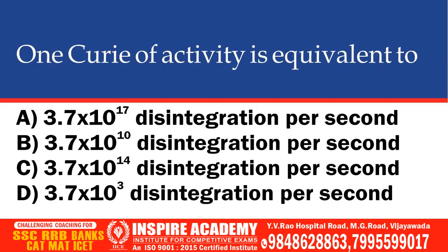One Curie of activity is equivalent to: 3.7 × 10^17, 3.7 × 10^10, or 3.7 × 10^3 disintegrations per second. The correct answer is 3.7 × 10^10 disintegrations per second.